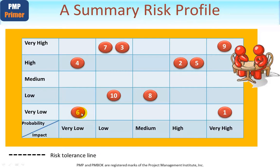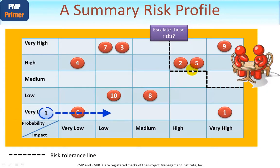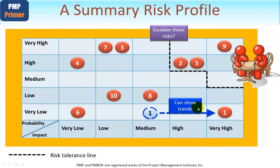This simple diagram is well suited for inclusion in standard project manager reports to management. You can add an escalation line to flag intolerable risks, and you can show trends — for instance, if risk 1 moved from medium to very high impact since the last report, management would expect an explanation and a response plan. Ideally, a project manager takes action to move each risk closer to the origin on the probability and impact scale.